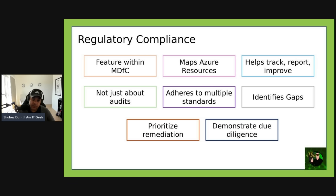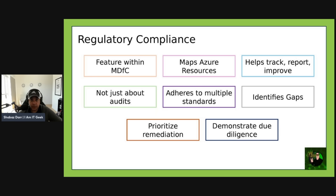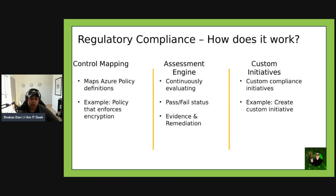Many organizations, especially in government, need to adhere to standards like CIS, NIST, ISO standards, PCI DSS, and UK Cyber Essentials — and there are equivalent standards in Australia and America. This dashboard, which we'll look at in the next episode, will help you identify gaps in compliance, prioritize remediation based on control failures, and demonstrate due diligence to auditors and stakeholders.